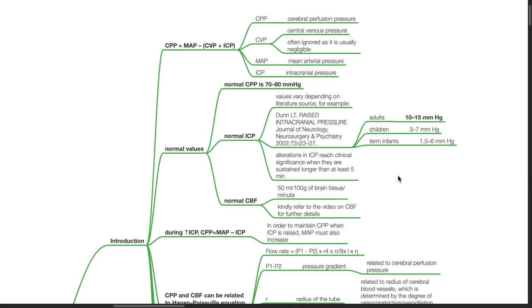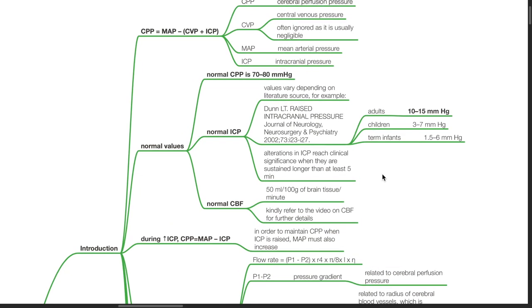Alterations in ICP reach clinical significance when they are sustained longer than at least 5 minutes. Normal CBF is 50 mL per 100 g of brain tissue per minute. Refer to the video on cerebral blood flow for further details.